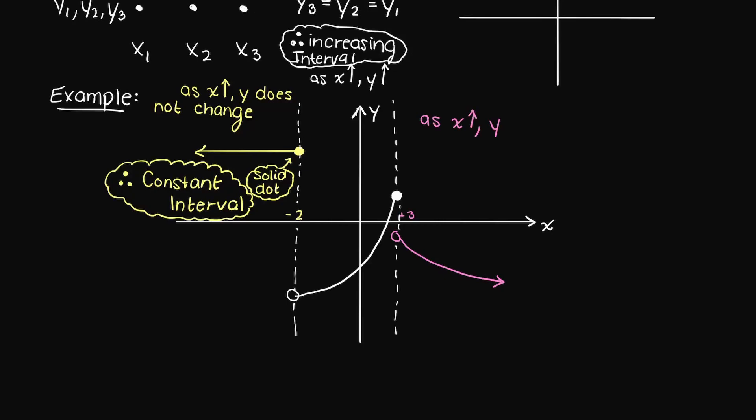In the final interval, we can see that our output drops off, so our y value is slowly decreasing as we move to a more positive x direction, therefore this means that this interval is decreasing from an input of slightly greater than positive 3 to positive infinity.